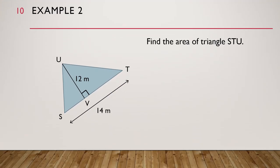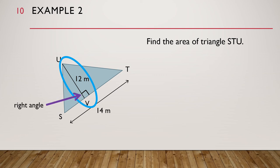Let's look at another example. The diagram shows a triangle STU. Find the area of triangle STU. Can you see the right angle in the triangle? Notice that the side ST of the triangle is perpendicular to this line which starts from the other vertex U of the triangle. So these are the base and height of the triangle. It is a good habit to label on the diagram the base and height of the triangle.